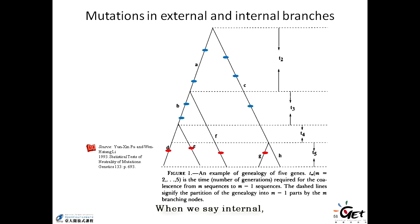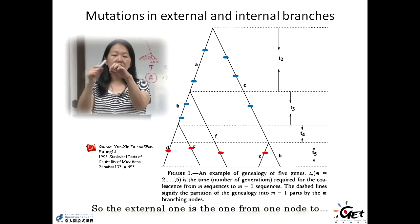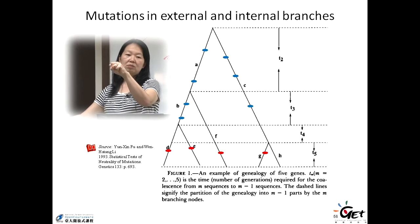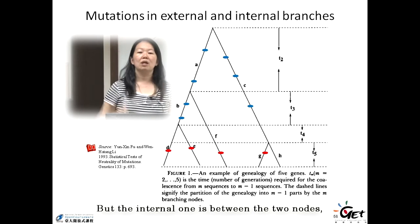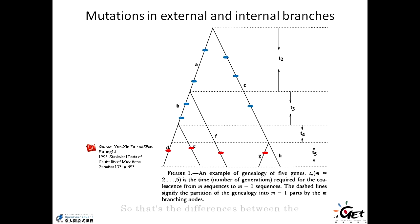When we say internal is the independent lineage from a single node, so to these two and also this one. But the internal one is the one in between two nodes. So the external one is the one from one node to the present time. But the internal one is between two nodes, between any two nodes. So that's the differences between the blue mutations and the red mutations on this slide.